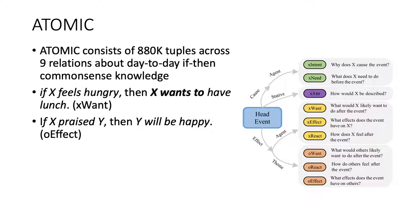Here are two examples of Atomic triples. If X feels hungry, then X wants to have lunch. If X praised Y, then Y will be happy.